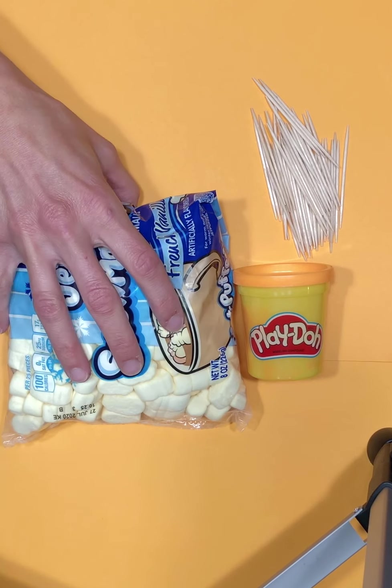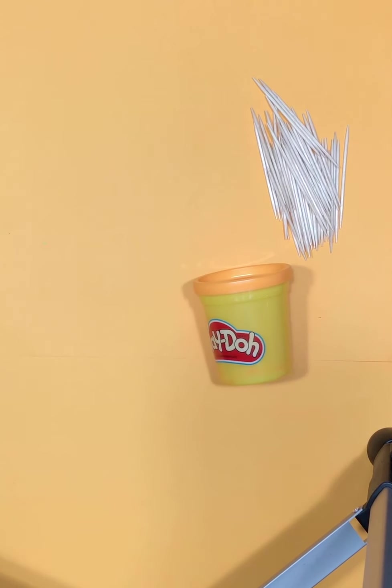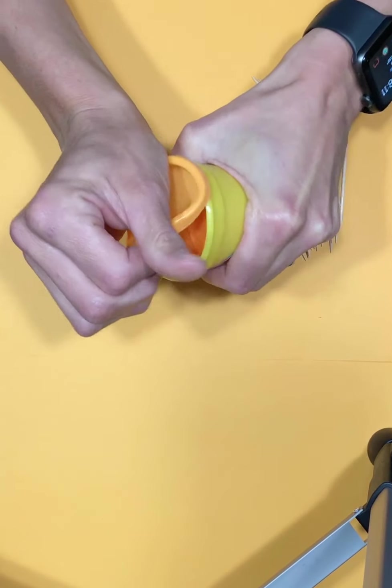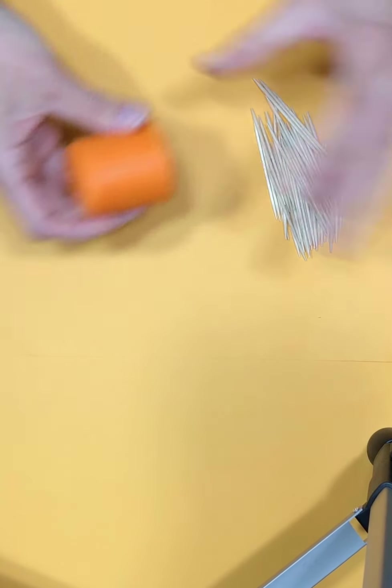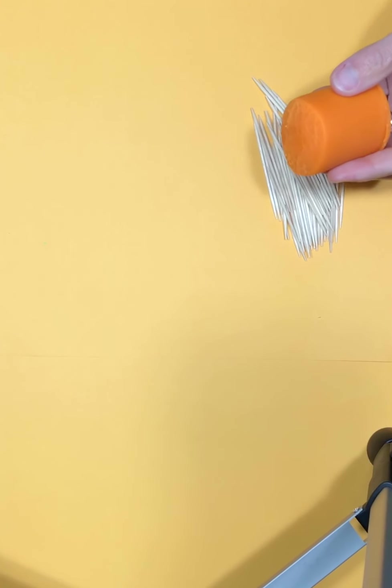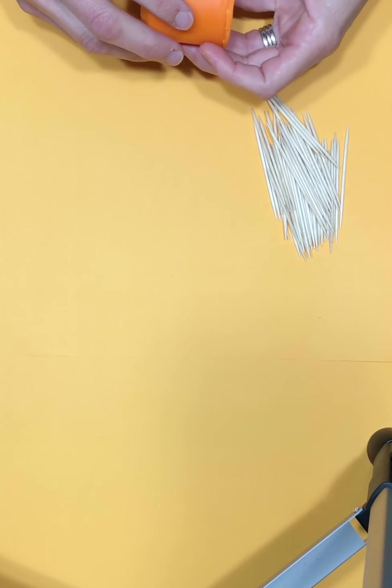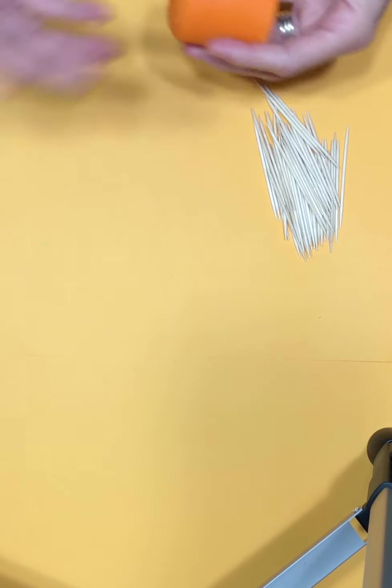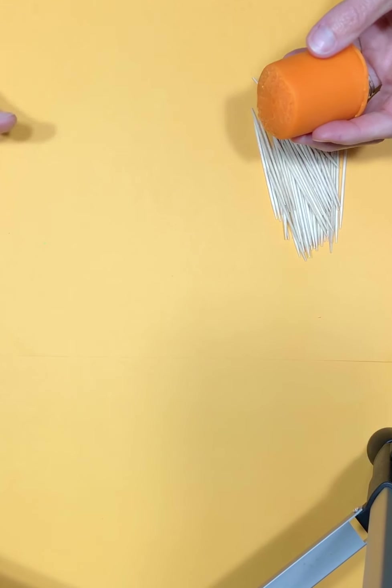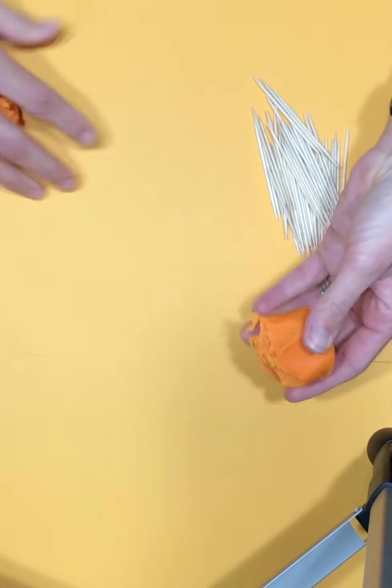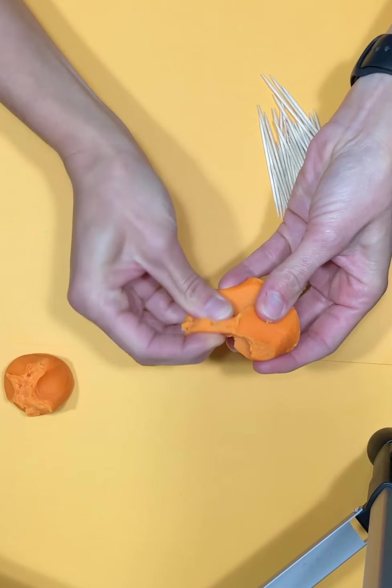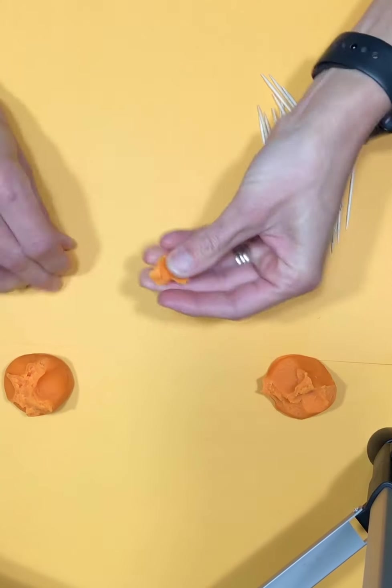I'm gonna start off using the play-doh. There's lots of different ways you can do this, so the way I show you isn't the only way you can build a tower. Your goal is to build the tallest tower you can that will support its own weight without falling over. You don't want to connect anything to the table, so with this play-doh I can start with a couple pieces.